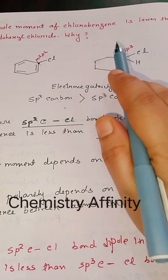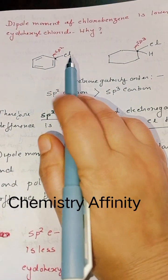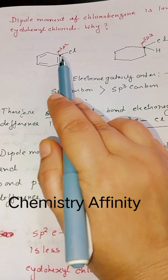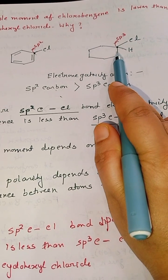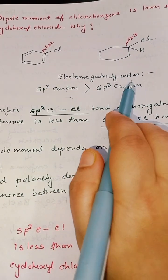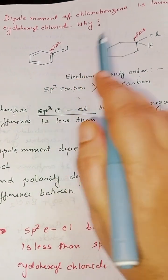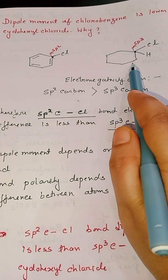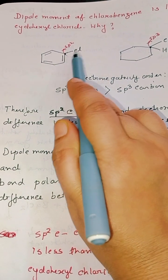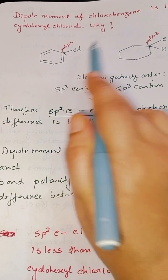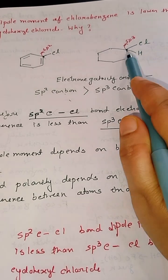Explain that the dipole moment of chlorobenzene is less than the dipole moment of cyclohexyl chloride. In chlorobenzene, the carbon is sp2 hybridized, whereas in cyclohexyl chloride it is sp3. Since sp2 carbon is more electronegative than sp3 carbon, the electronegativity difference between carbon and chlorine in chlorobenzene is less, while in cyclohexyl chloride the sp3 carbon-chlorine electronegativity difference is more.